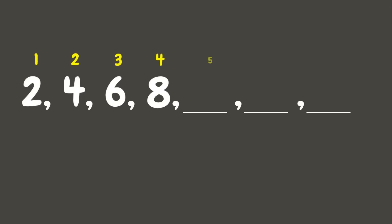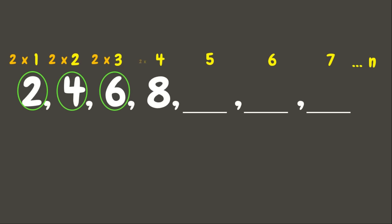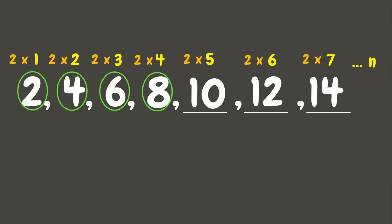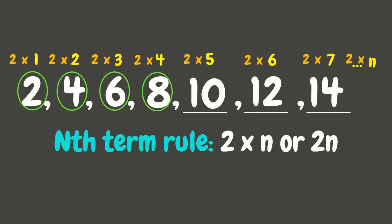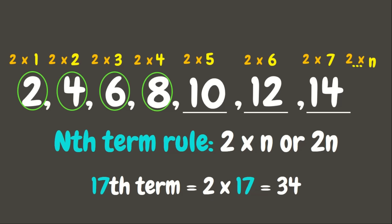Let's have another example: the sequence 2, 4, 6, 8. Let's solve this using counting numbers. We observe that multiplying 2 by each counting number gives us each term: 2×1=2, 2×2=4, 2×3=6, 2×4=8. For the 5th term: 2×5=10, 6th: 2×6=12, 7th: 2×7=14. Therefore our nth term rule is 2×n, or 2n. The 10th term is 2×10=20, and the 17th term is 2×17=34.